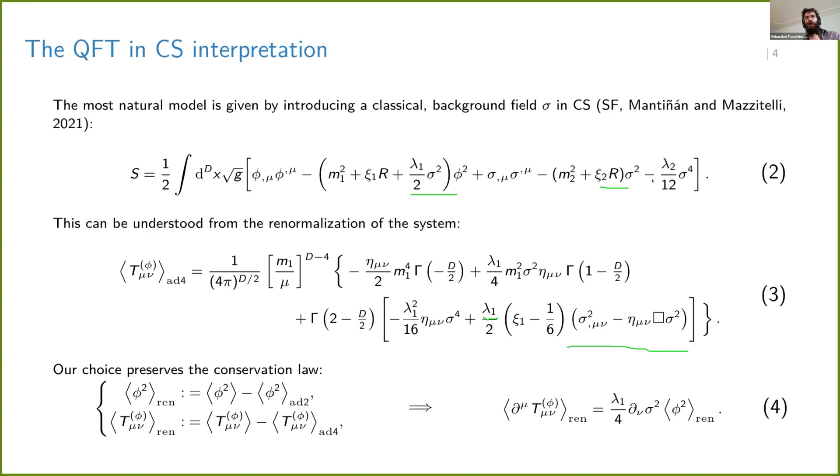So having said so, there are some peculiarities. For example, at the classical level, you have a conservation law which is given in equation four. And it's also kept in the quantum case.